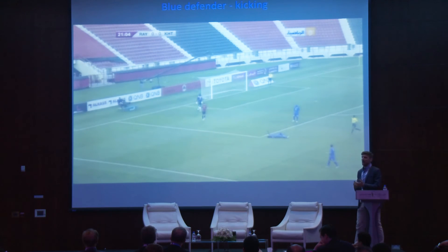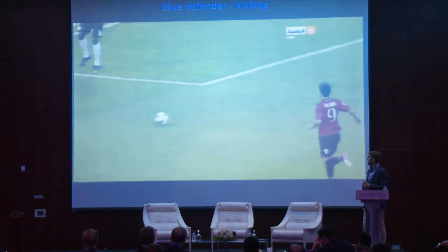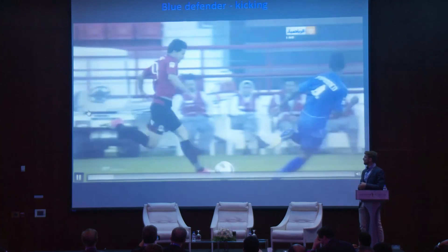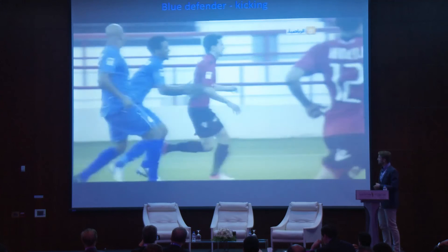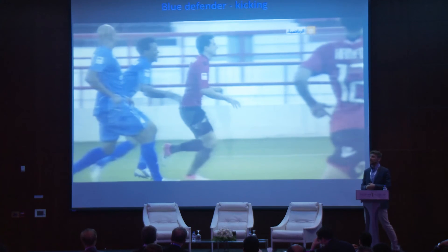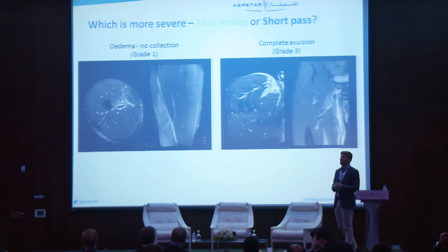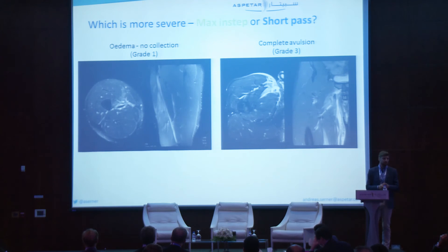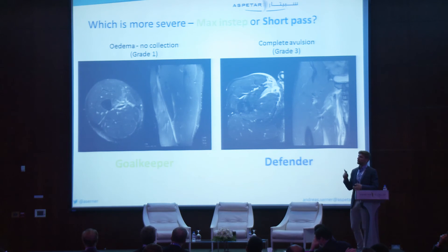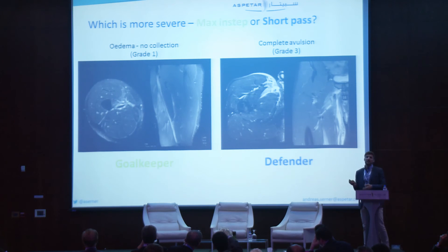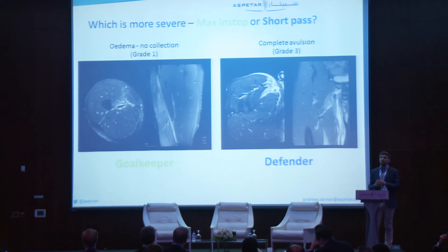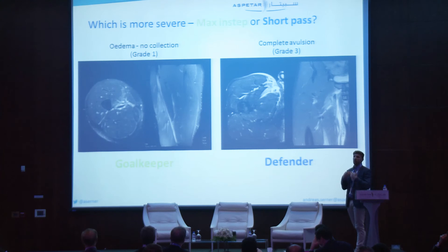This next injury is categorized as a kicking injury, but it's a short pass — you don't have those high forces involved. Getting closer, we can see the player is a little bit behind the ball, has to stretch back and kick it, and gets an injury. A very minor-looking situation compared to the maximal kick. Yet one of these cases is a grade one adductor longus injury and the other is a complete adductor longus avulsion. The point is that the situation doesn't have to look violent or involve obviously high forces, yet can cause severe injuries.